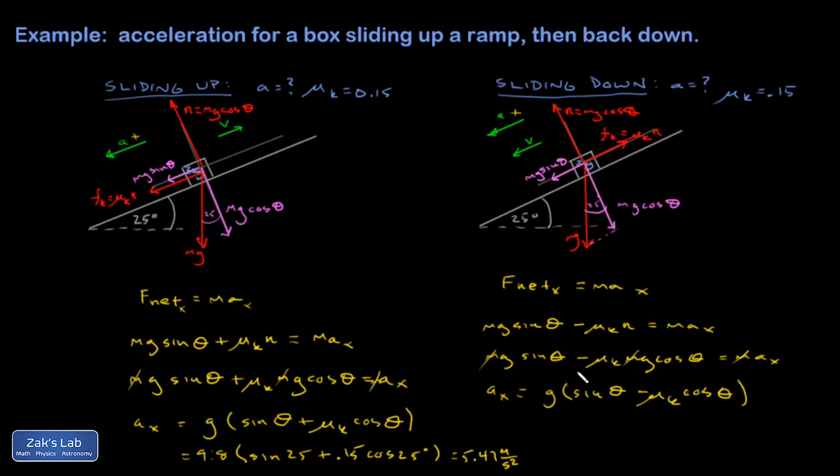So what changed between these two calculations is that the sign on that mu k cosine theta term.